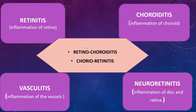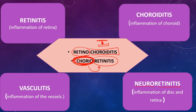Retinochoroiditis means that the inflammation starts in the retina and then spreads deeper to involve the choroid. Chorioretinitis is when the inflammation starts in the choroid and then spreads upward to the retina. An example of retinochoroiditis is toxoplasma — it always comes from the retina and then involves the choroid. The example of chorioretinitis is tuberculosis — TB always comes from the choroid and then goes to involve the retina.